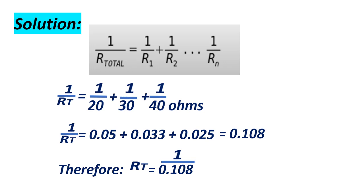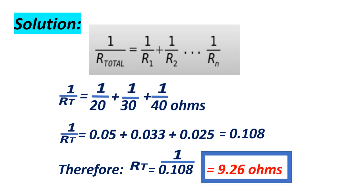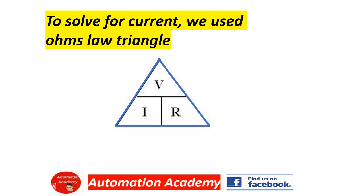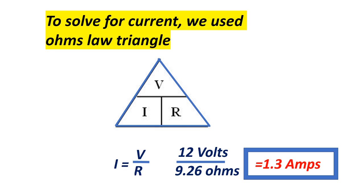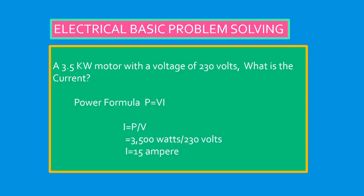Then we cross multiply to simplify. Therefore, RT = 1/1.08, and the answer is 9.26 ohms. To solve the current, we use Ohm's law triangle: I = V/R. Our voltage is 12 volts, our total resistance in parallel is 9.26 ohms, and the answer is 1.3 amperes.